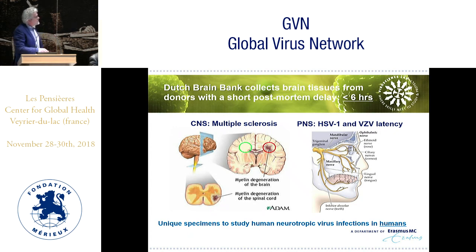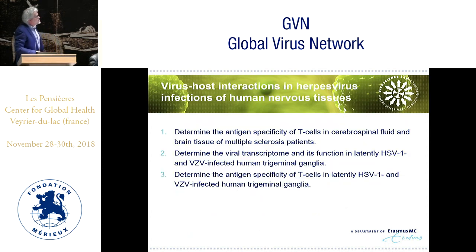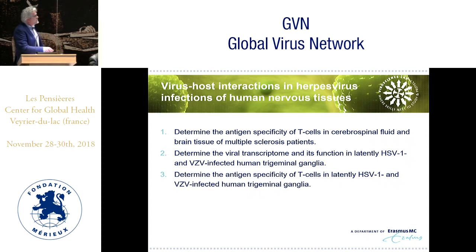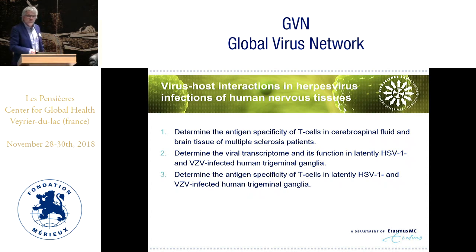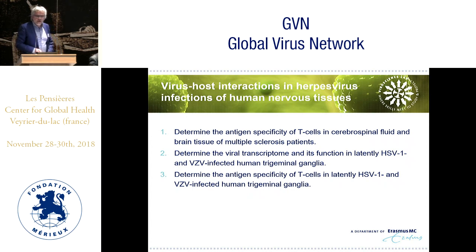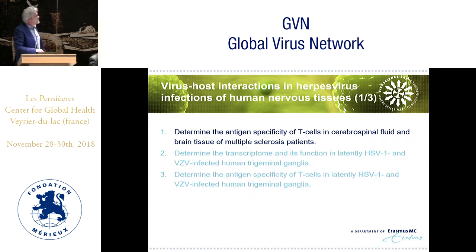We are studying the immune pathology of MS — in normal appearing white matter, lesions, and human trigeminal ganglia — to identify virus-host interactions with regard to VZV and HSV1. I will share three studies performed over the past five years: the antigen specificity of T cells in CSF and brain of MS patients; identifying the viral transcriptome, which is important for developing a functional cure using CRISPR-Cas technology; and antigen specificity at the site of latency to develop therapeutic vaccines limiting reactivation.